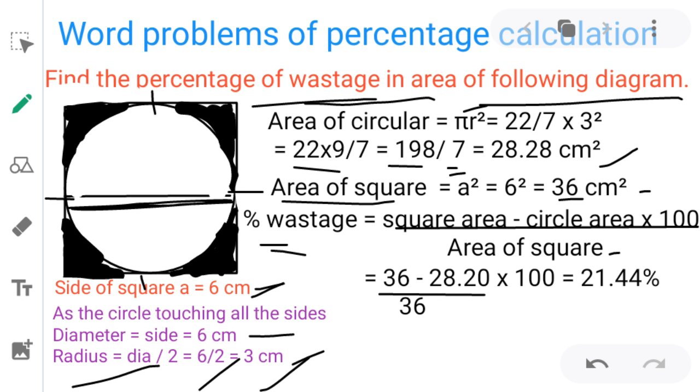We have to subtract the larger area and smaller area. We have to divide the upcoming result with the larger area. 36 is the larger area, that is the area of square. 28.20 or 28 is the area of circle, that is the smaller area. We have to divide once again with 36.